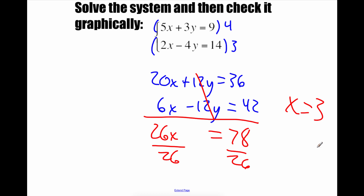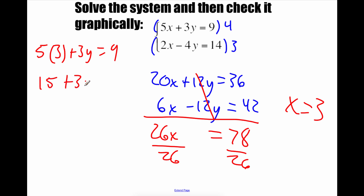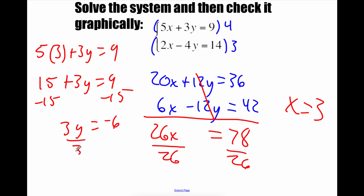We're not quite done because we need to figure out our y value. So we pick one of our equations and plug in the x value — I'll use the top equation. So 5 times 3 plus 3y equals 9. Well, 5 times 3 is 15, so 15 + 3y = 9. Subtracting the 15 over, we get 3y = -6. Dividing by 3, we get y = -2. So our ordered pair is (3, -2).